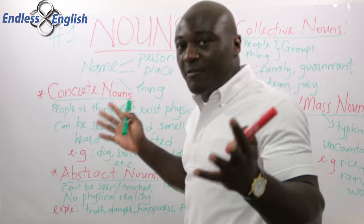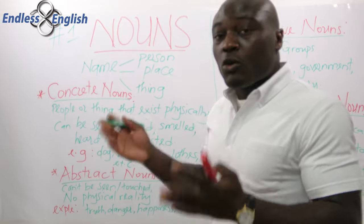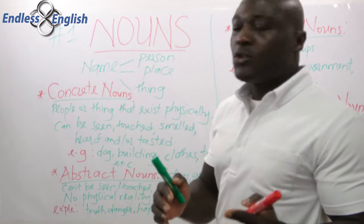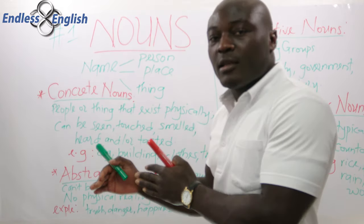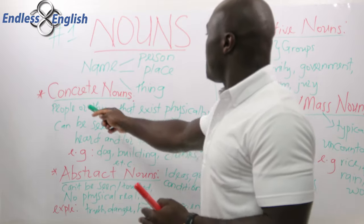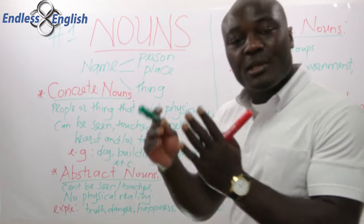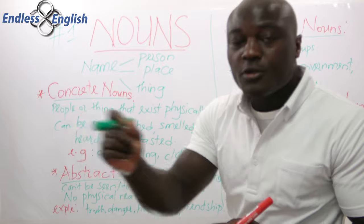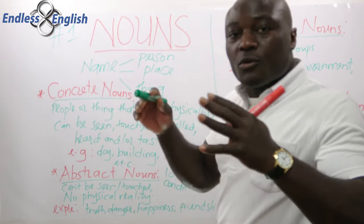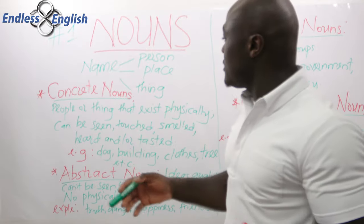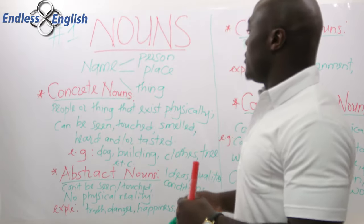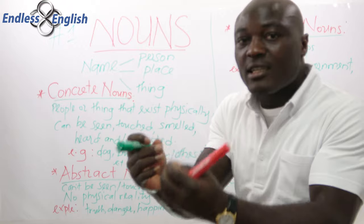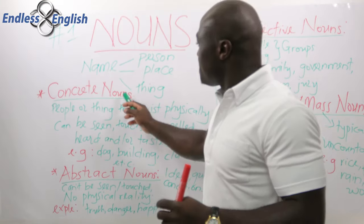The first type is concrete nouns. A concrete noun refers to people or things that exist physically — things you can actually see, touch, or smell. If a word has one or all of these qualities, it is a concrete noun. Something that can be seen, touched, smelled, or even tasted is a concrete noun.